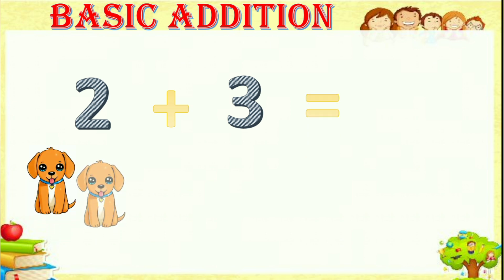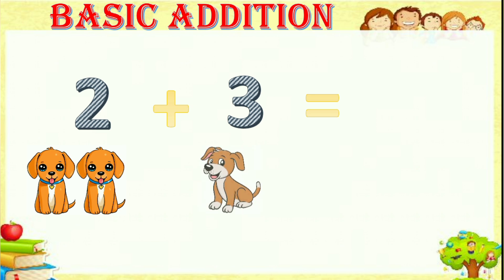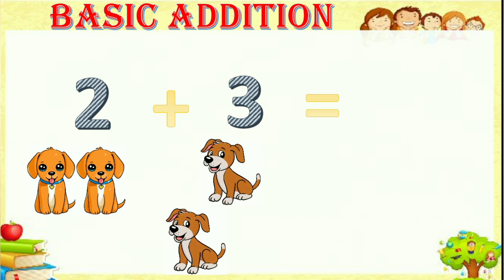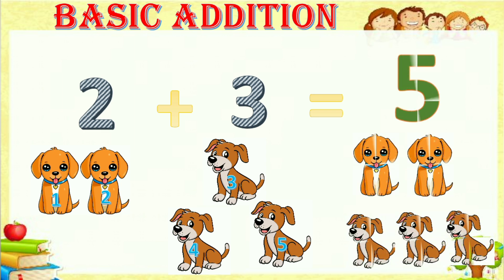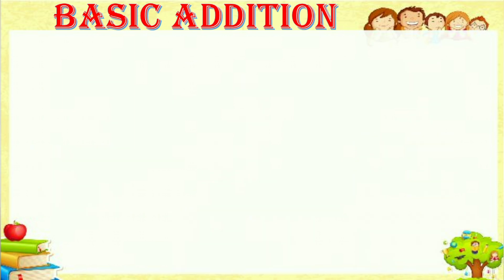Next, two plus three equals. For two there are one, two — two puppies. And for three there are one, two, three — three puppies. So totally we have to count one, two, three, four, five — the answer is five puppies.